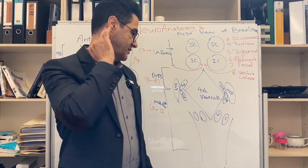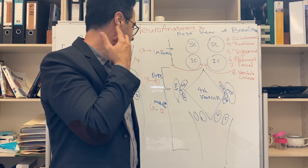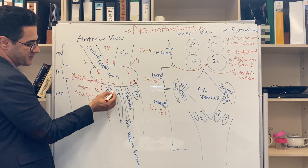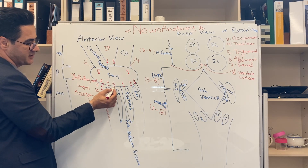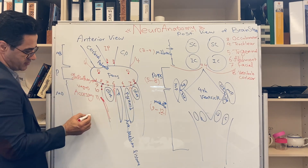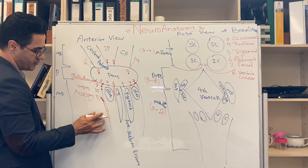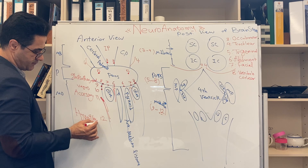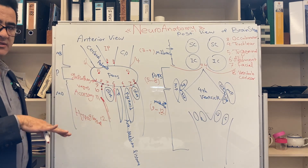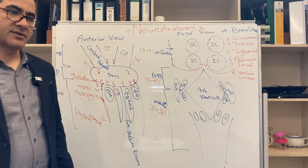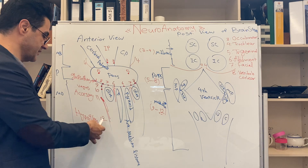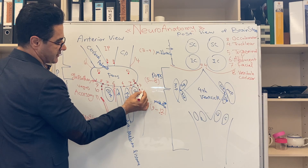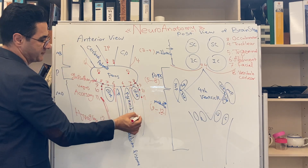The accessory nerve mainly supplies the sternocleidomastoid muscle and the trapezius. Cranial nerve 12 comes out between the pyramid and olive and is known as the hypoglossal nerve. 'Hypo' means beneath and 'gloss' means tongue — it passes underneath the tongue and supplies the tongue muscles. It is a motor nerve.